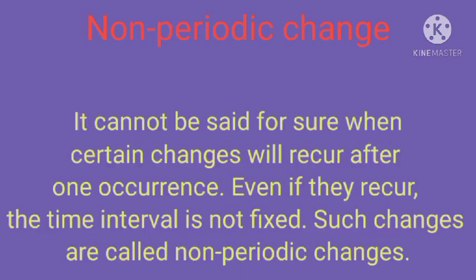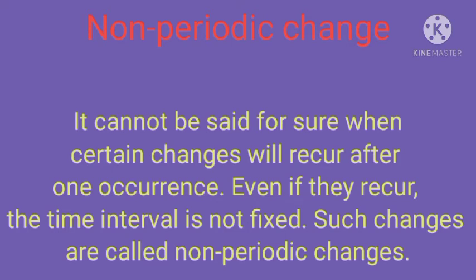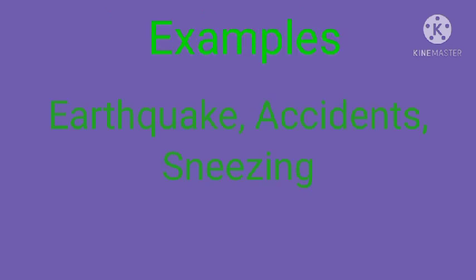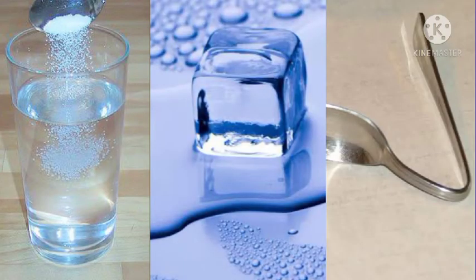Next is the non-periodic change. It cannot be said for sure when certain changes will reoccur after one occurrence — the interval is not fixed. Such changes are called non-periodic changes, meaning there is no certainty about their repetition. Examples include earthquakes, accidents, and sneezing.